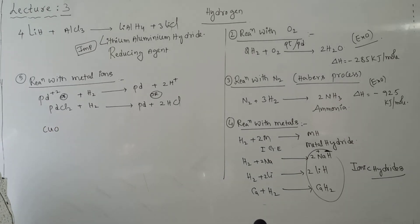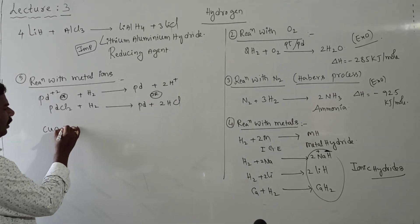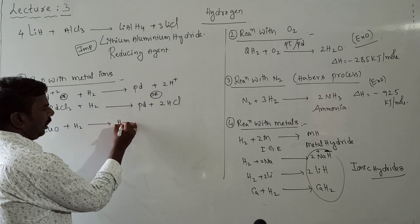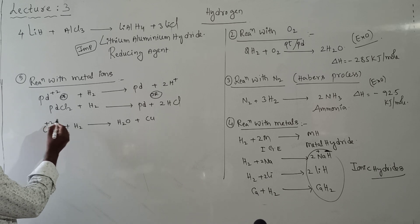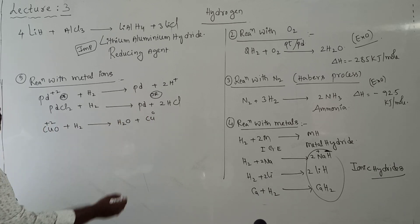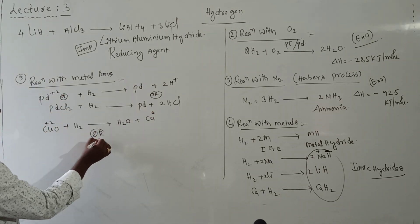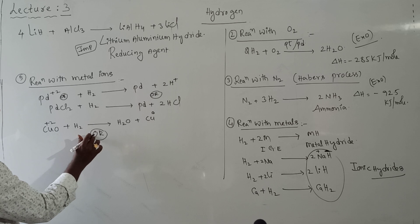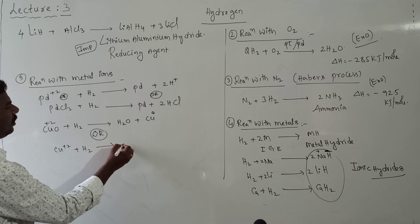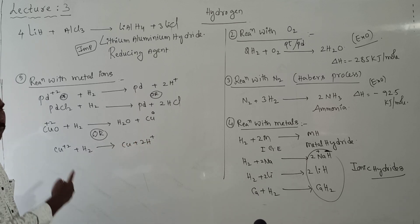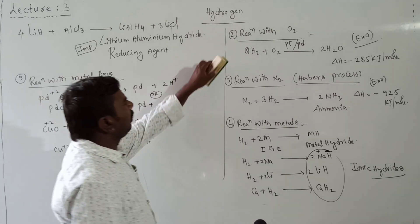Similarly, CuO (where Cu is +2 and O is −2) reacted with H₂ gives H₂O + Cu. Copper(II) is converted to Cu⁰. In ionic form: Cu²⁺ + H₂ → Cu + 2H⁺. Both representations are the same.